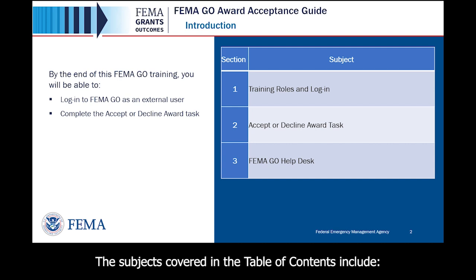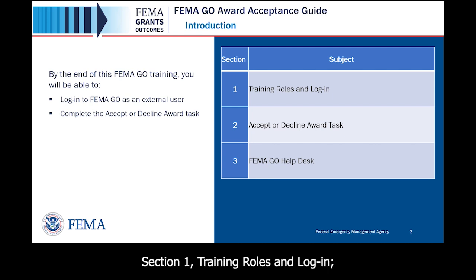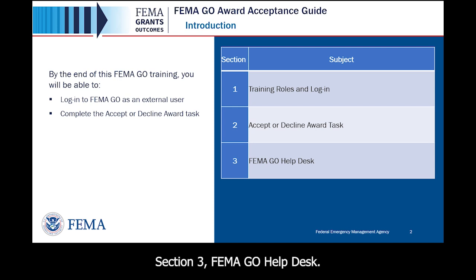The subjects covered in the Table of Contents include Section 1, Training Roles and Login; Section 2, Accept or Decline Award Task; Section 3, FEMA GO Help Desk.